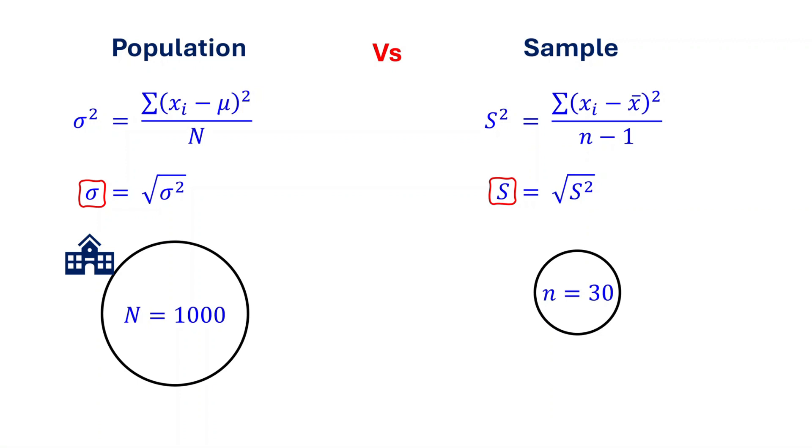The key difference between these formulas is how we divide when calculating variance. When we are working with a population, we have data for every single member of the group. Because we have all the data, we divide by the population size to find the exact variance and standard deviation.